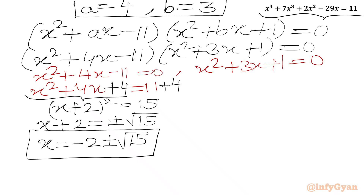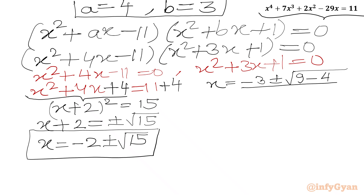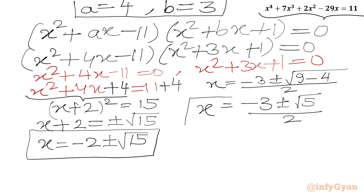Now we solve the second quadratic equation x² + 3x + 1 = 0 using the quadratic formula: x = (-3 ± √(9 - 4)) / 2 = (-3 ± √5) / 2. So we have the other two real solutions. In total we have 4 real solutions: -2 ± √15 and (-3 ± √5)/2.